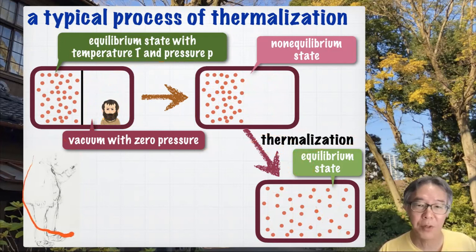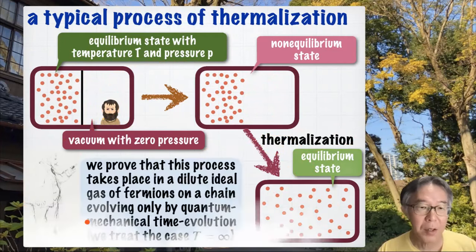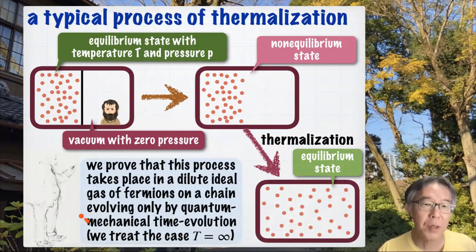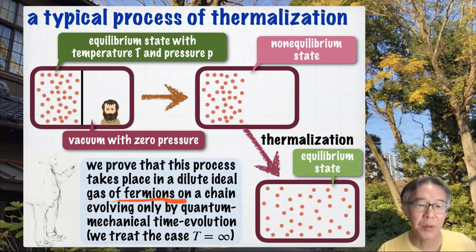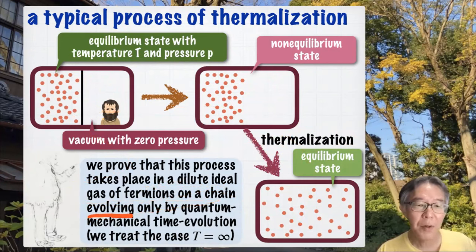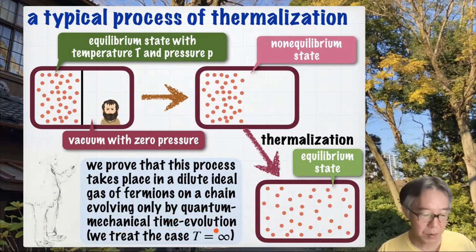This process is called thermalization. This is Professor Boltzmann. And in this paper, we prove that this process does take place in a dilute ideal gas of fermions on a chain — this is important — evolving only under quantum mechanical time evolution.